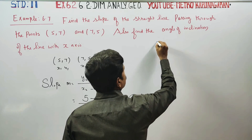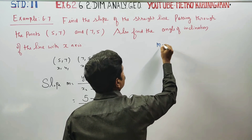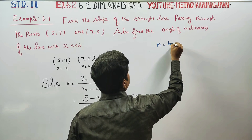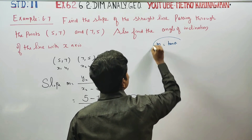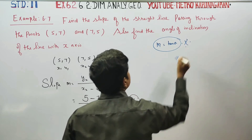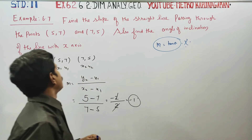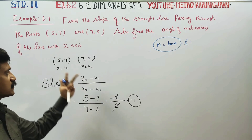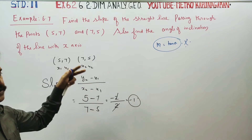We can say that slope is tan theta, and the formula used is the 2-point formula: y2 minus y1 by x2 minus x1.